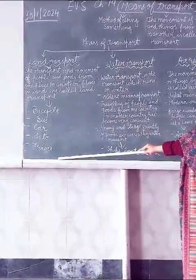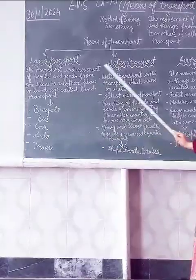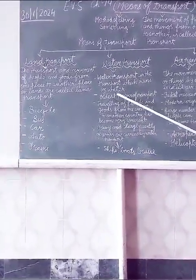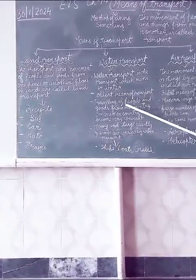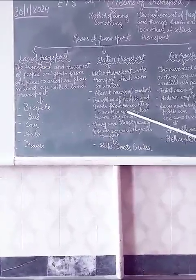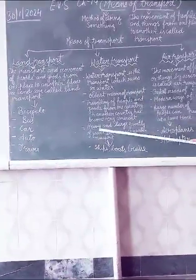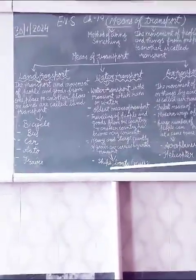Examples of land transport are bicycle, bus, car, auto, and trains. Water transport is the transport which runs on water. It is the oldest means of transport. Traveling of people and goods from one country to another country has become very convenient due to water transport. Heavy and large quantities of goods are carried by water transport.